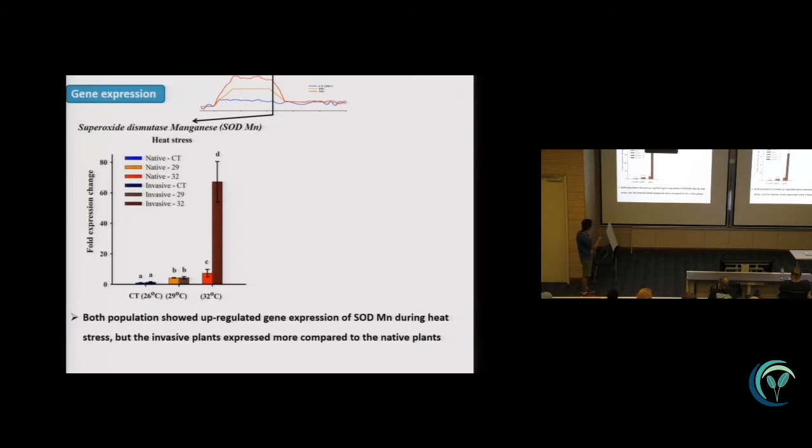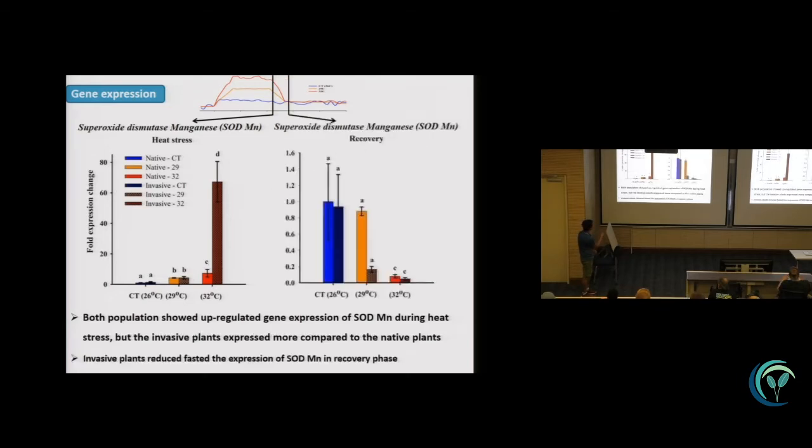But we can also see clearly from here that the level of expression from the invasive plant was much, much higher compared to the native plant. And then what happened in the recovery phase, we see during the stress, the invasive plant expressed a lot of antioxidant species, so they can cope with the increasing temperatures.